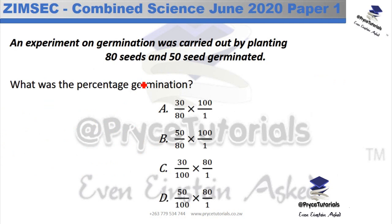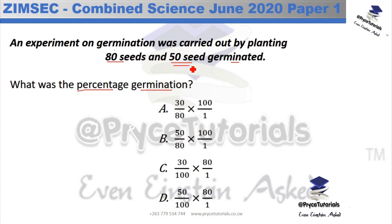An experiment on germination was carried out by planting 80 seeds, and 50 seeds germinated. To find the percentage germination: take the number of seeds that germinated (50) divided by the total number of seeds planted (80), multiplied by 100%. The answer is option B.